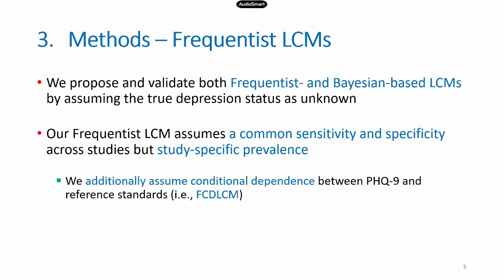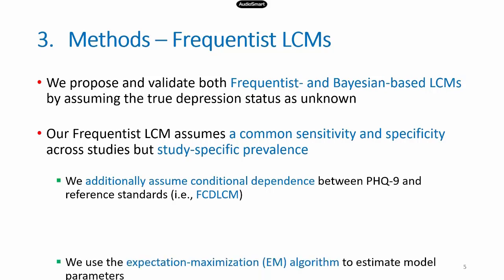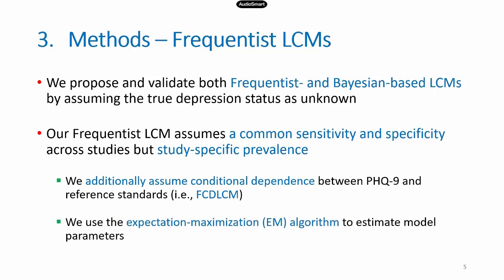Unlike Walter's frequentist latent class model, which assumed conditional independence, we introduce covariance terms to describe the expected cell frequencies. Our model is thus an extension of that model. We use the expectation-maximization algorithm to estimate the model parameters — particularly the sensitivities and specificities of each test, as well as prevalence.